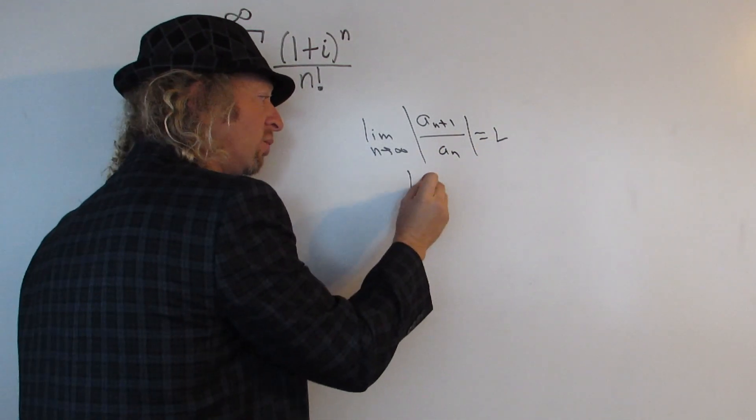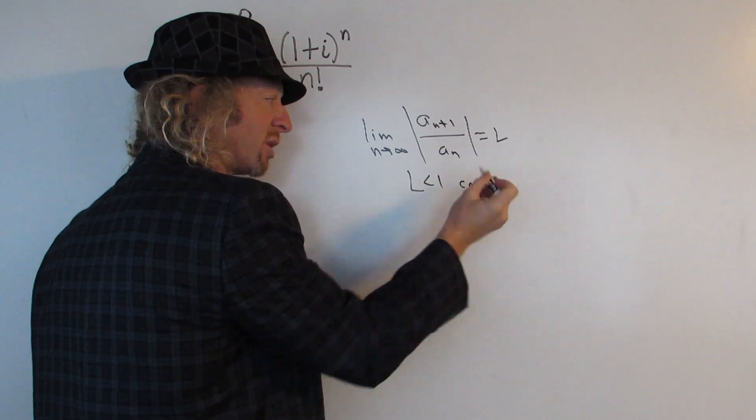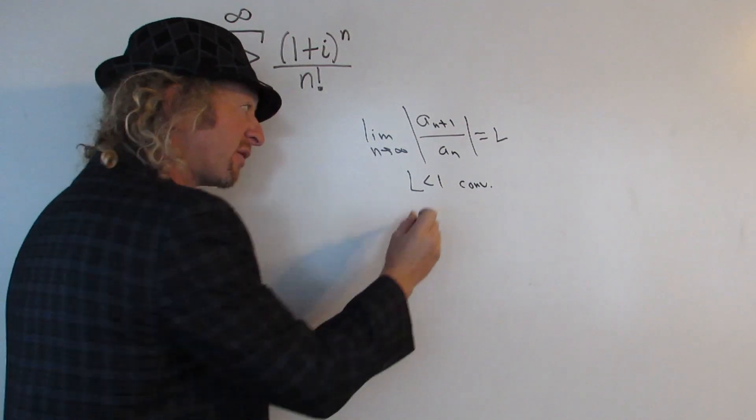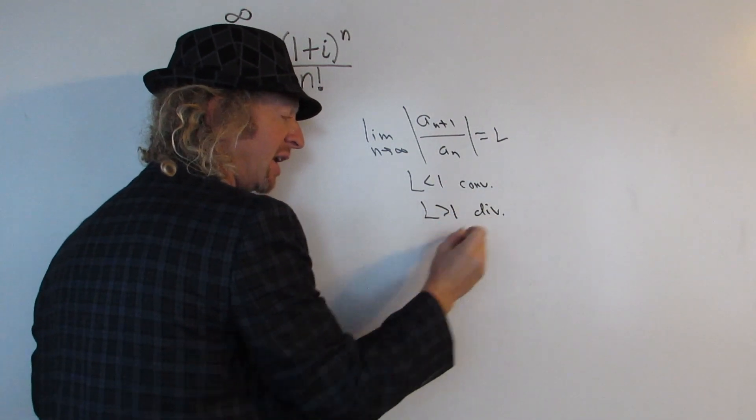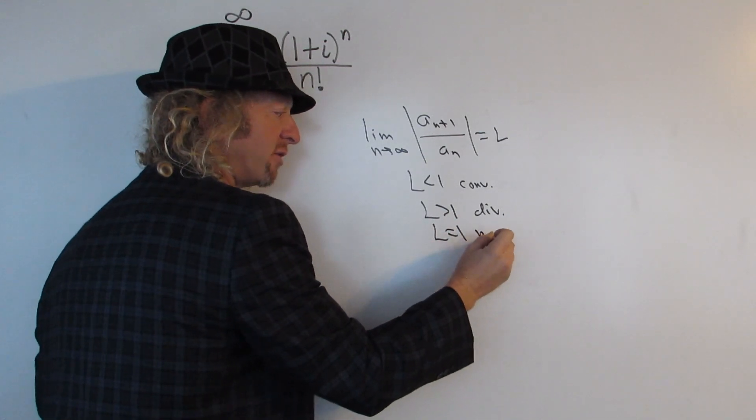One, if l is less than 1, the series converges. If l is bigger than 1, the series diverges, and if l is equal to 1, we have no info.